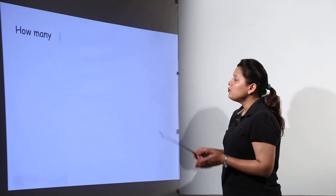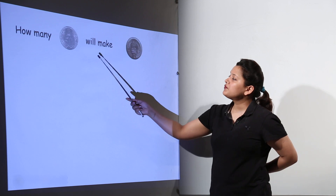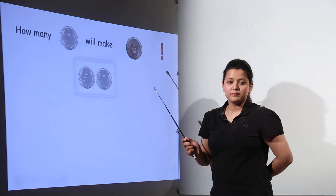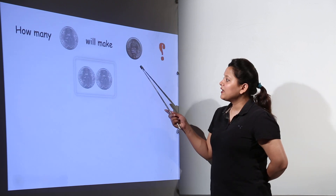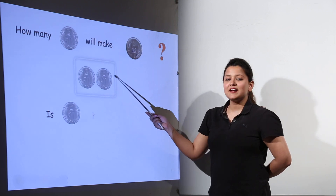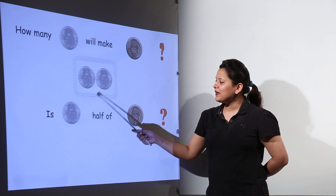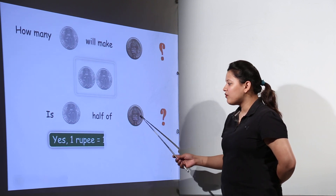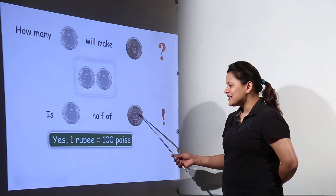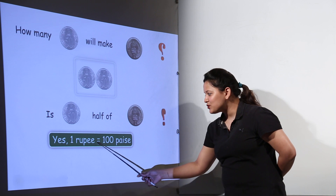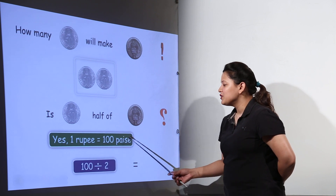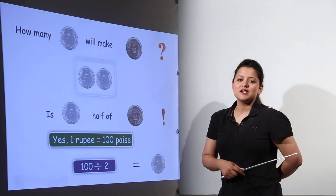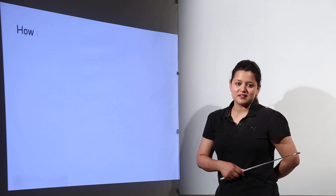Now we shall discuss how many 50 paisa coins would make 1 rupee. The exact answer is 2. So that makes 50 paisa half of 1 rupee. Yes, exactly, because 1 rupee is 100 paisa, so 100 divided by 2 gives us 50 paisa.